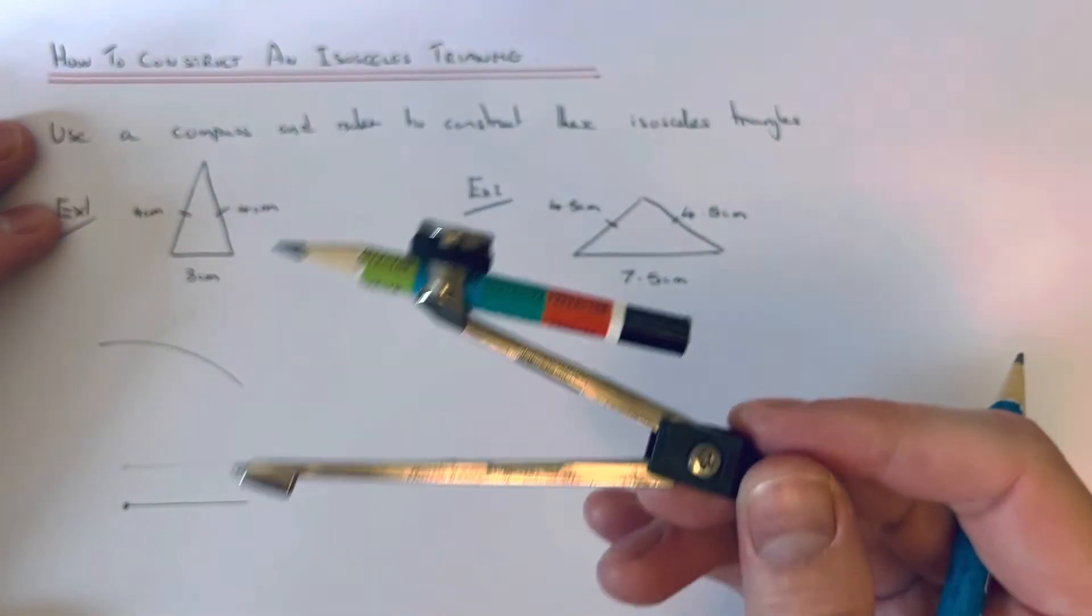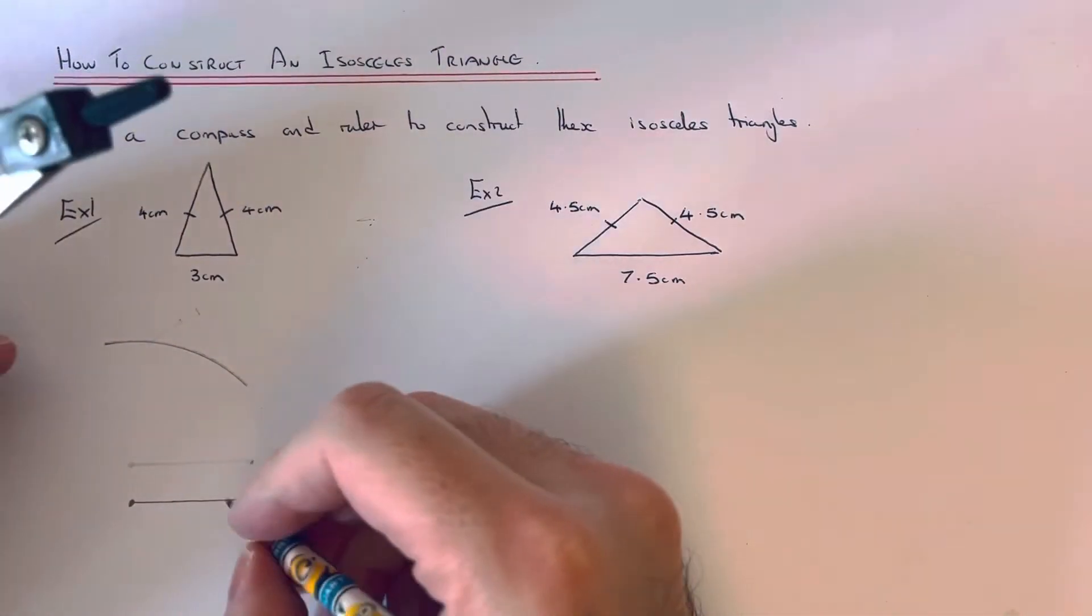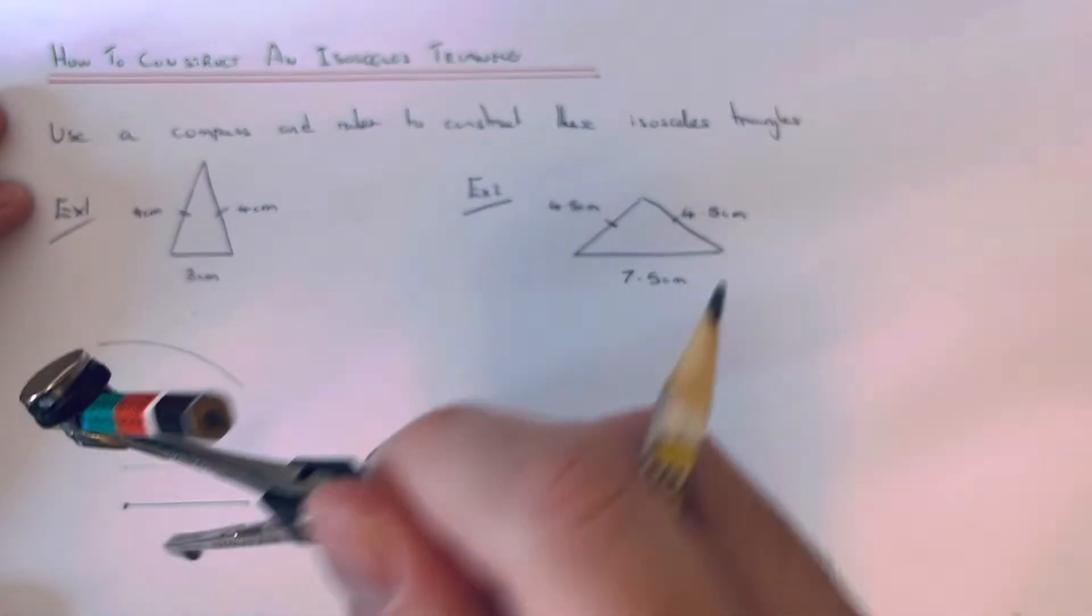Keep your compass the same length because the other side is 4 centimeters. Do another arc from the right side of the line.